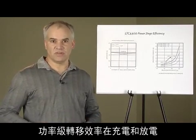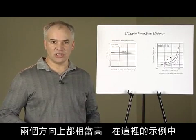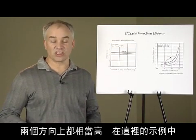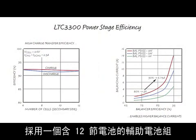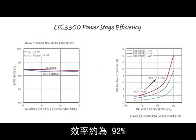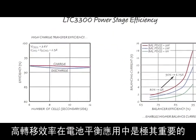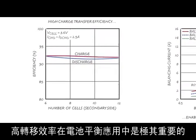The power stage transfer efficiency is quite high in both the charging and discharging directions, approximately 92% in the example shown here with a 12 cell secondary stack. High transfer efficiency is extremely important in a battery balancing application.